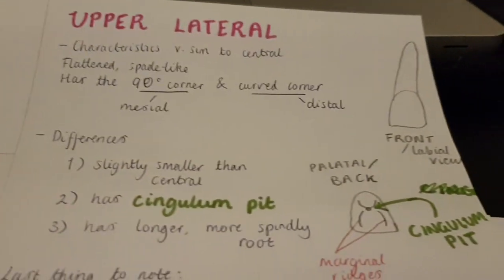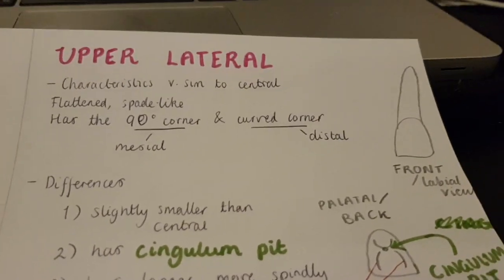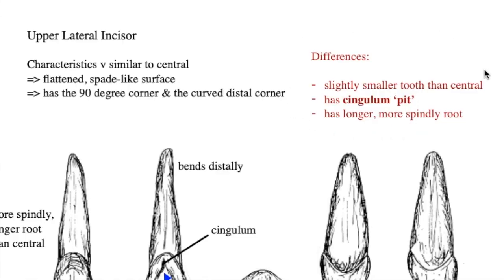Now on to the upper lateral incisor. The characteristics are very similar — this is pretty much an identical tooth with a few differences. It's flattened and spade-like on its labial surface, has the 90-degree corner showing the mesial side and a more curved corner indicating the distal side. Slight differences are that it is smaller than the central. The biggest difference is that it has a cingulum pit, which I'll come on to. The third difference is that the root is slightly longer and more spindly.